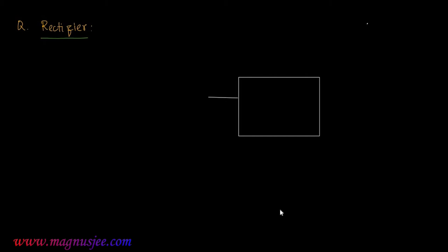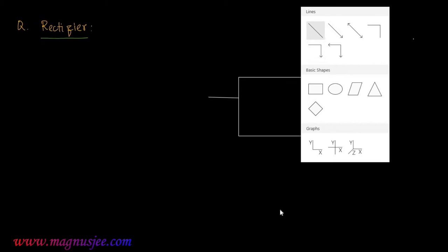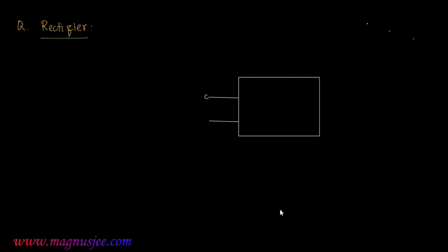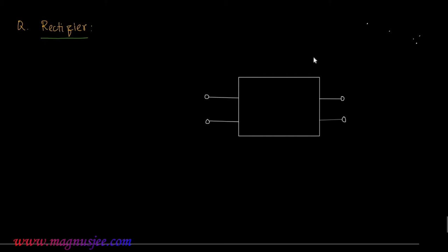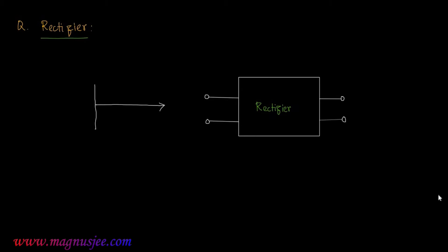We have to know what a rectifier is. Here is a simplified diagram of a rectifier — this box represents the simplified form of a rectifier, which has two input terminals on the left-hand side and two output terminals on the right-hand side.